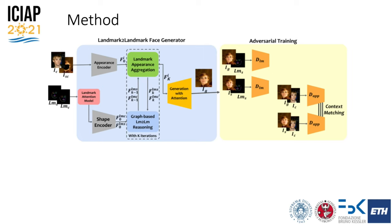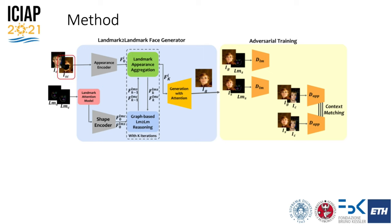Our proposed method takes as input two images: the source face to anonymize and the non-sensitive condition face, which provides the identity to use. From these two faces, we extract 68 landmarks using D-Lib to provide information about the poses of the two faces. Using these landmarks, we remove the facial area of the source image to avoid leakage of personal information throughout the network.